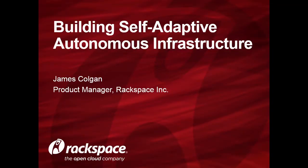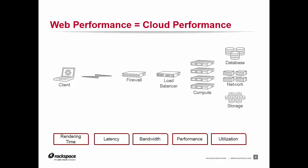We need to prepare your web applications for the increasing unpredictability and the demands that your users are putting on them. As uncertainty and unpredictability increase in the way users are accessing your web application, we need to move past mere infrastructure automation and move more towards a self-adaptive and autonomous infrastructure. At the core, web performance equals cloud performance — your web performance is dependent upon things like latency, CPU utilization, and network bandwidth.